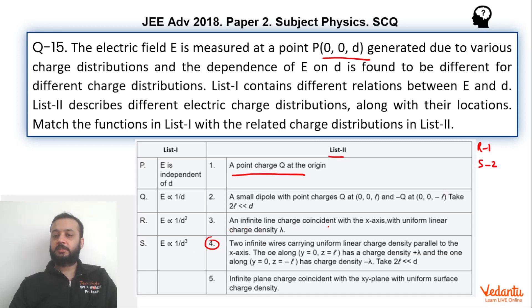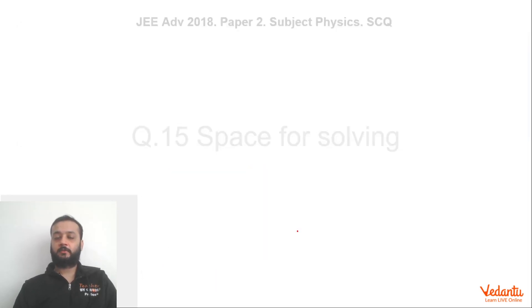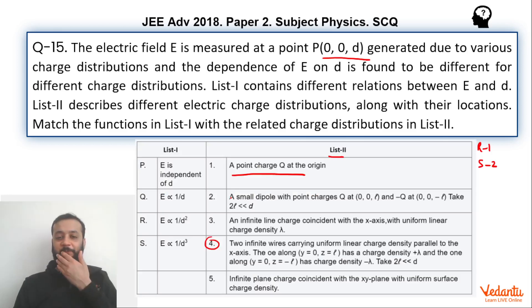Now if you talk about infinite line charge coincident with x-axis with uniform linear charge density lambda. If this is the x-axis, we have infinite line charge like this. Let's say this is the line charge coincident with x-axis and we have to find the electric field at this point which is 0, 0, d. We can say that electric field at this point will be in the radially outward direction if we are assuming this to be positive. Electric field will be 2K lambda by d. Hence we can say that electric field is proportional to 1 upon d. So option 3 matches with Q.